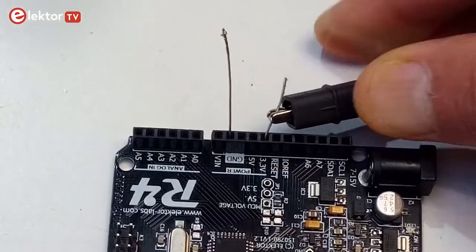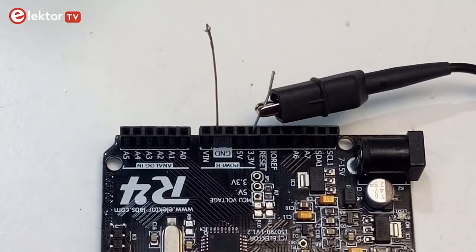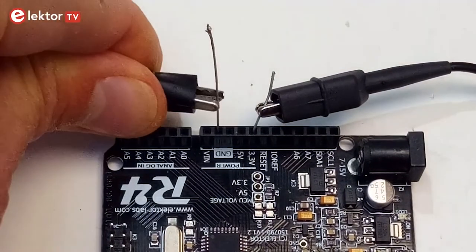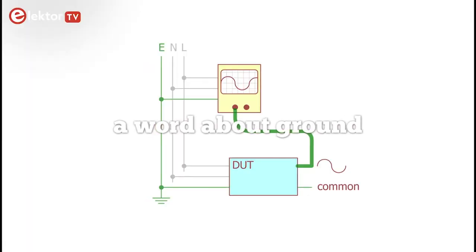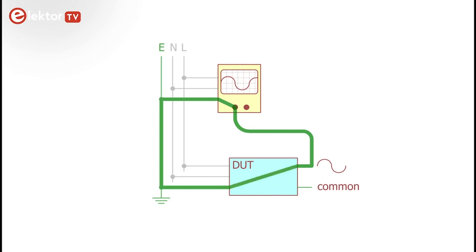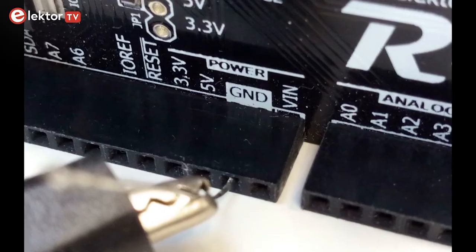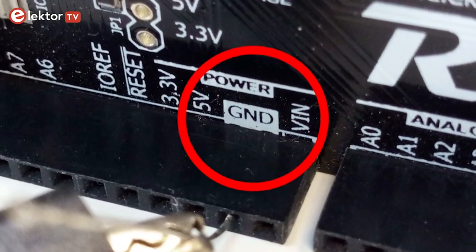Note that ground doesn't have to be ground, it can be any voltage or signal in the circuit, but it must be the same for every vertical channel. Also note that probe ground is usually connected to oscilloscope ground, which can be connected to mains ground. So if you connect the probe ground to something other than ground, short circuits may be created and dangerous situations may arise. Therefore, we only connect the crocodile clip to ground.